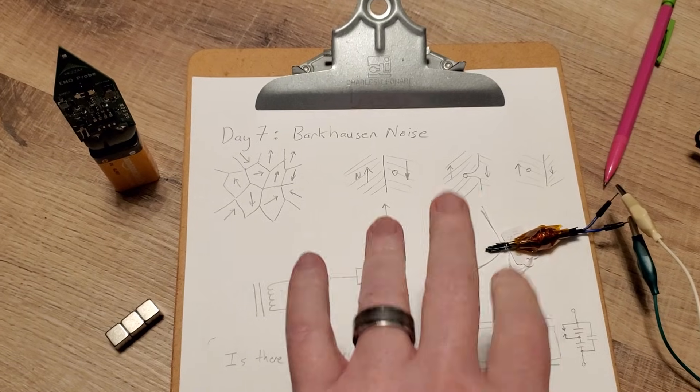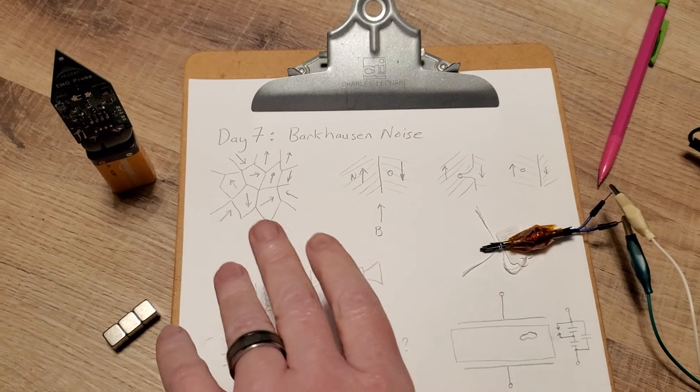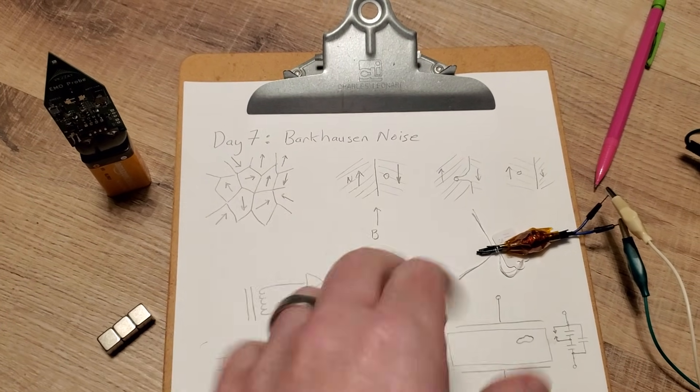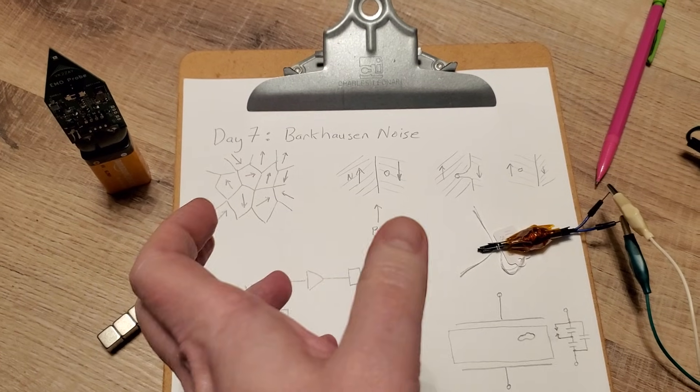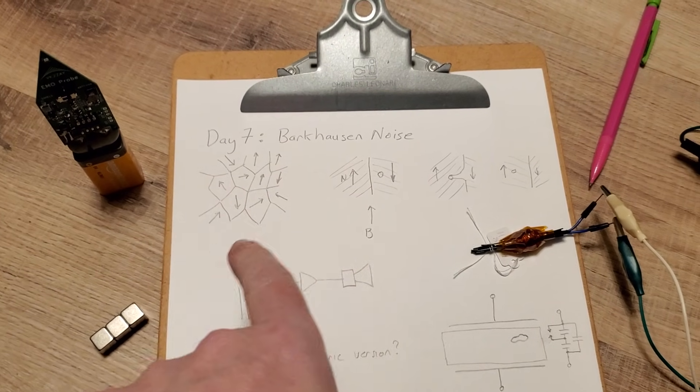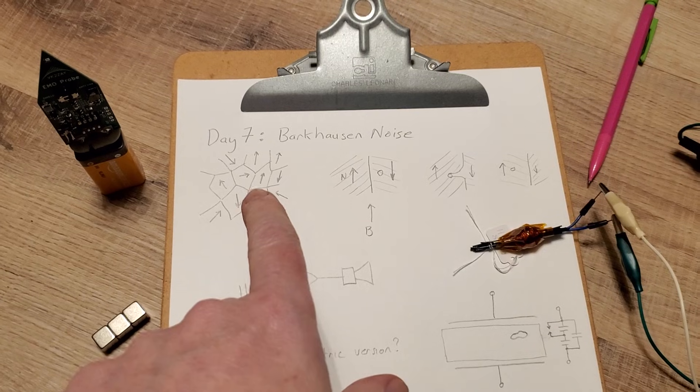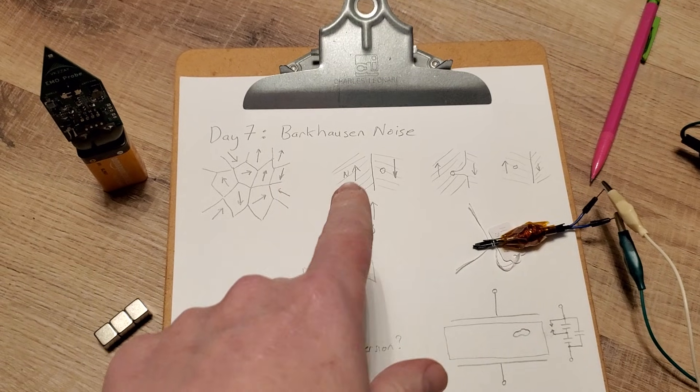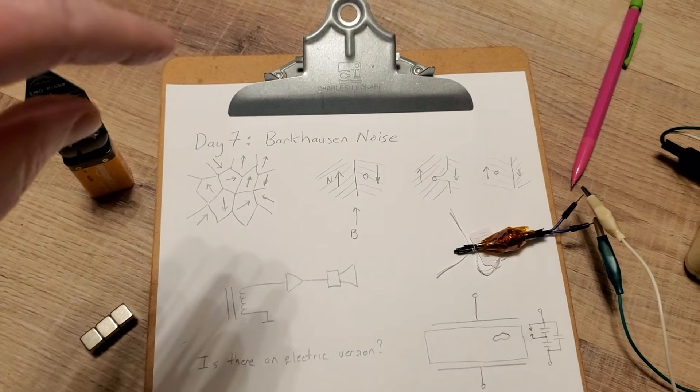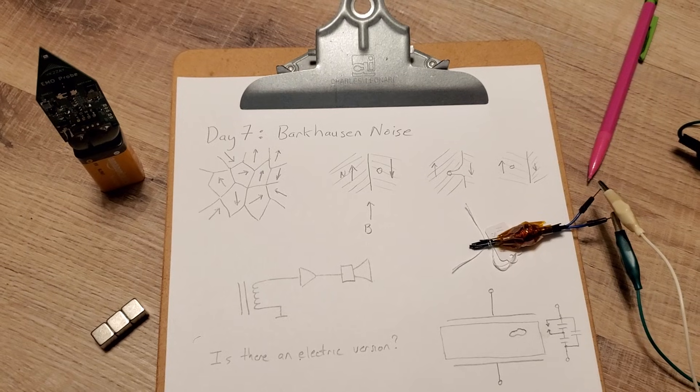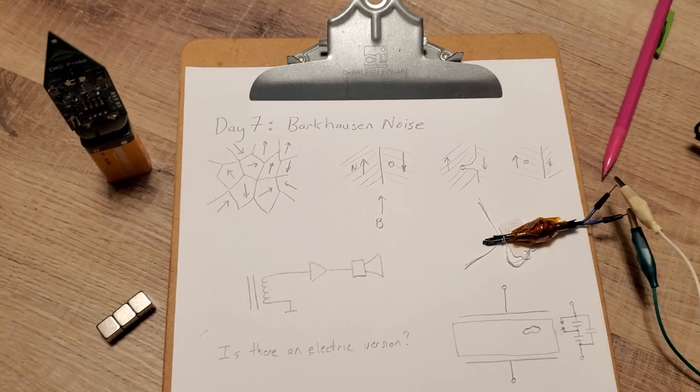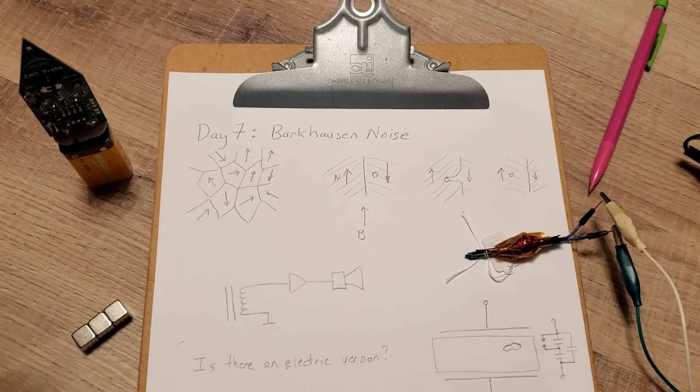At different scales there's different things going on, but essentially as the domains reorient or grow and shrink with respect to each other there are defects in the lattice or other areas that cause pinning of magnetic fields, or there's actually phase change of large groups of magnetic domains that can either flip all together or not.